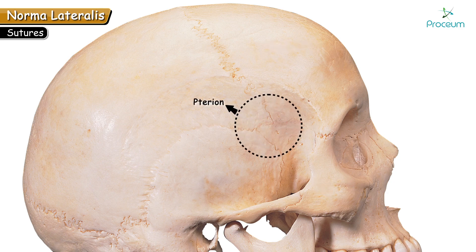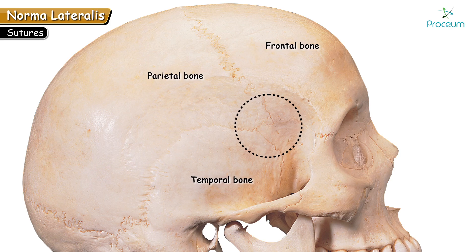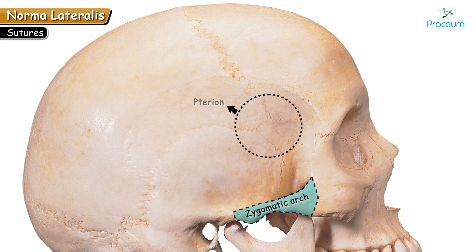Pterion is an H-shaped suture — a capital H-shaped suture — having two vertical limbs and a horizontal limb, and it is formed by four bones: frontal, parietal, temporal, and greater wing of sphenoid. These four bones join to form the Pterion, which is located four centimetres above the zygomatic arch.